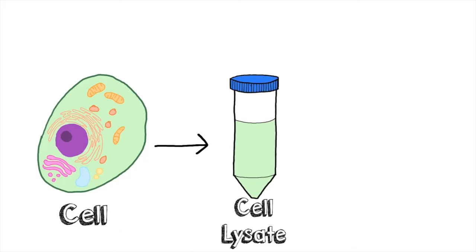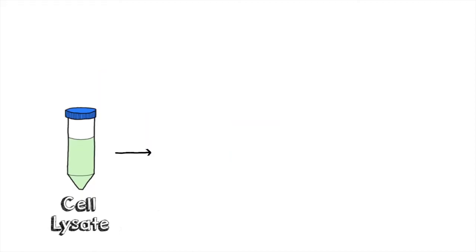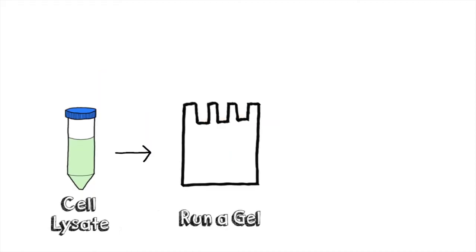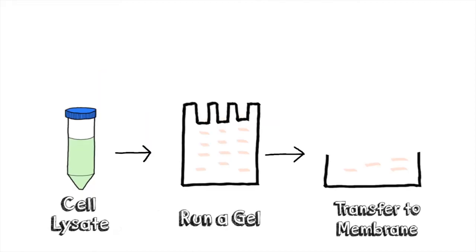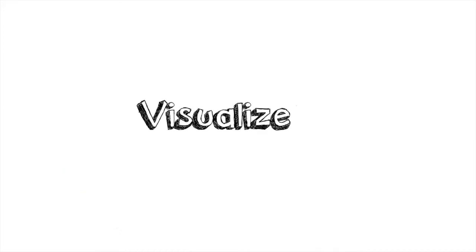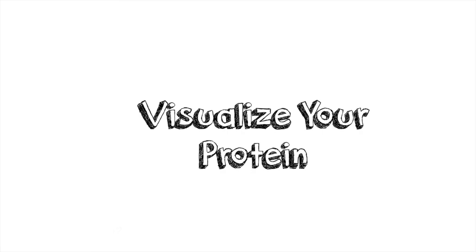First, researchers lyse the cells and run that lysate on a protein gel. The proteins are then transferred to a membrane with high affinity for proteins. Now, let's say that we have a desired protein for which we want to study the expression.